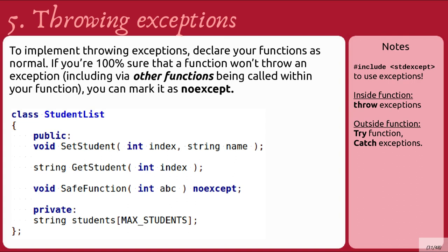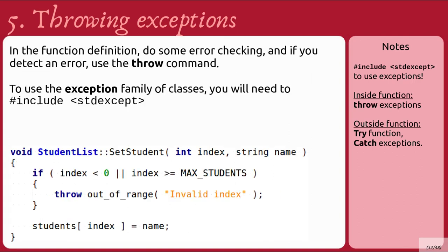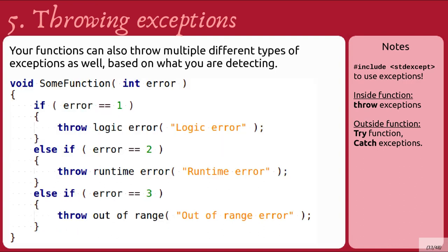To implement throwing exceptions, declare your functions as normal. If you're 100% sure that a function won't throw an exception, including via other functions called within it, you can mark it as noExcept. In the function definition, do some error checking, and if you detect an error, use the throw command. To use the exception family of classes, you'll need to include the stdexcept library. Your functions can also throw multiple different types of exceptions based on what you're detecting.